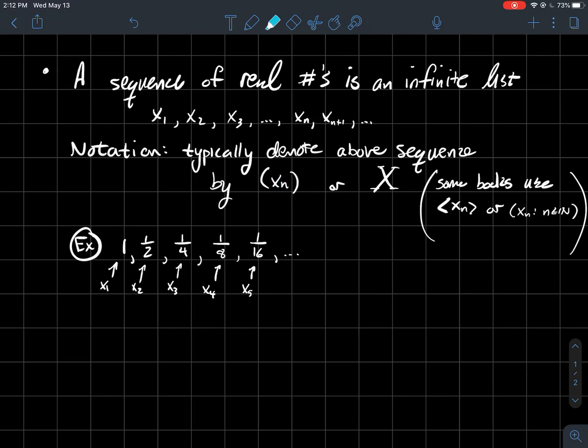Is there a formula for what the nth term looks like here? And if you look at this, this is like one half to the zero, one half to the one, one half squared, one half cubed, one half to the fourth, and so on. But maybe you see that my index is a little bit ahead of that. So xₙ should be one over two to the n minus first power, or one half to the n minus first power.